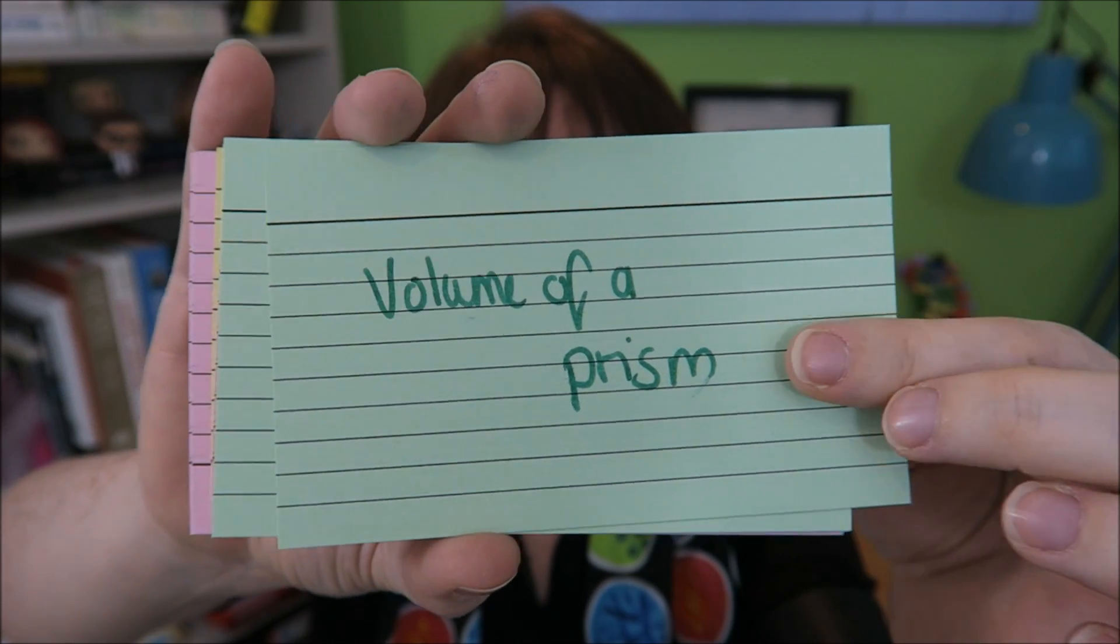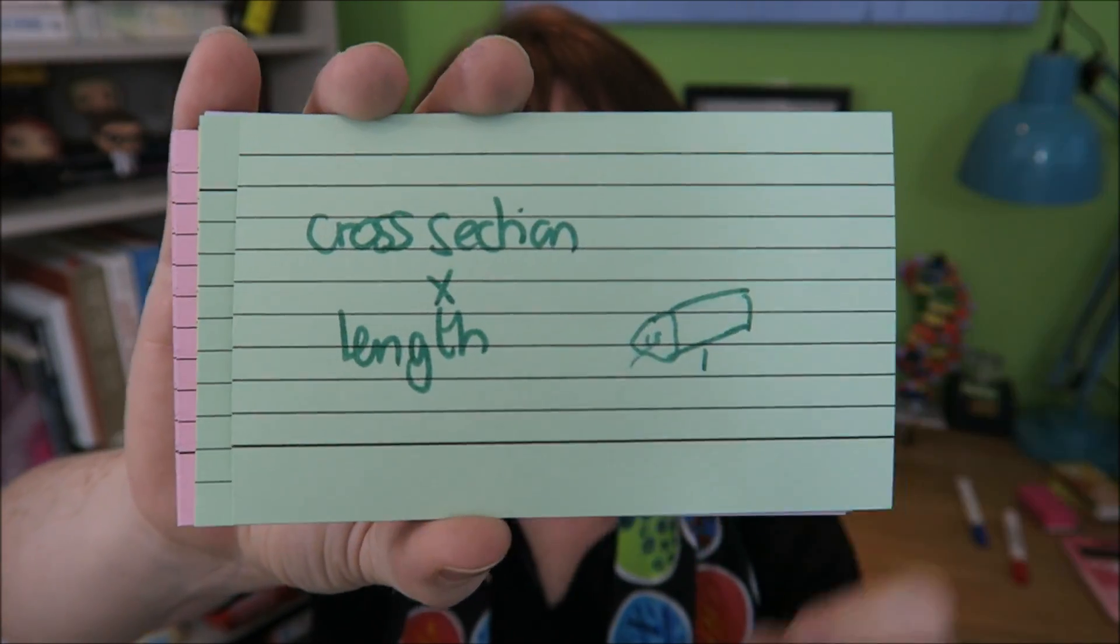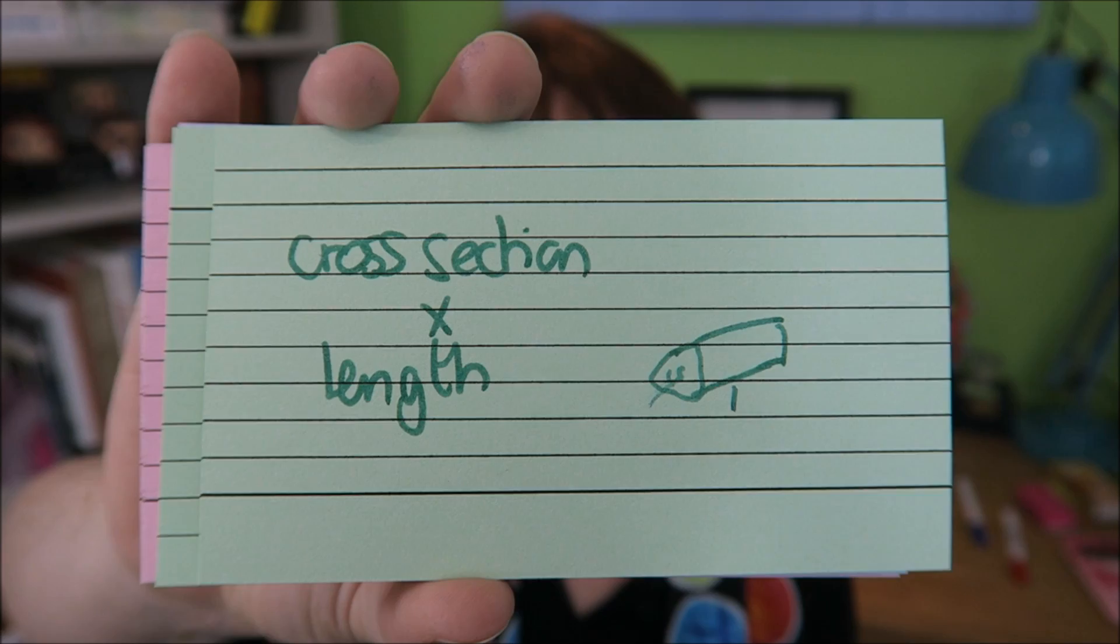Volume of a prism. That is the cross section times the length.